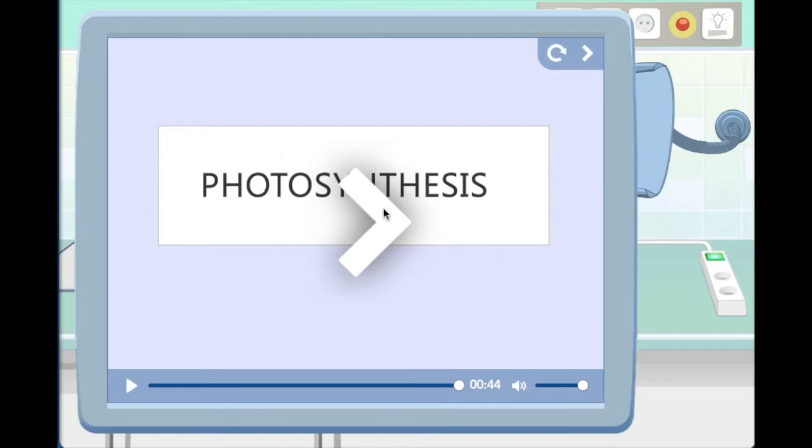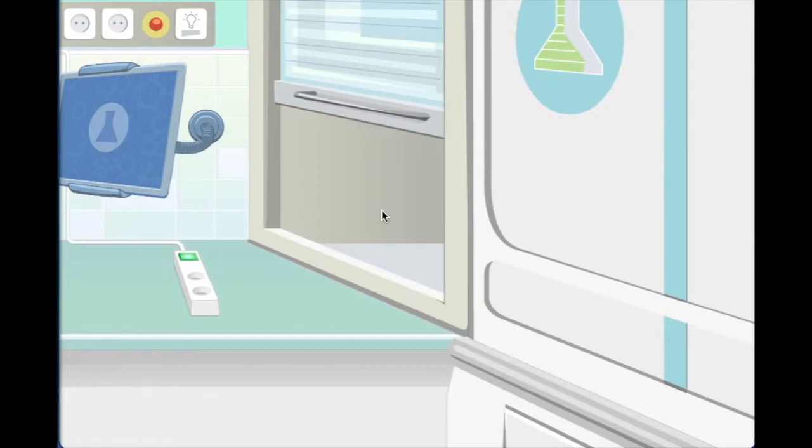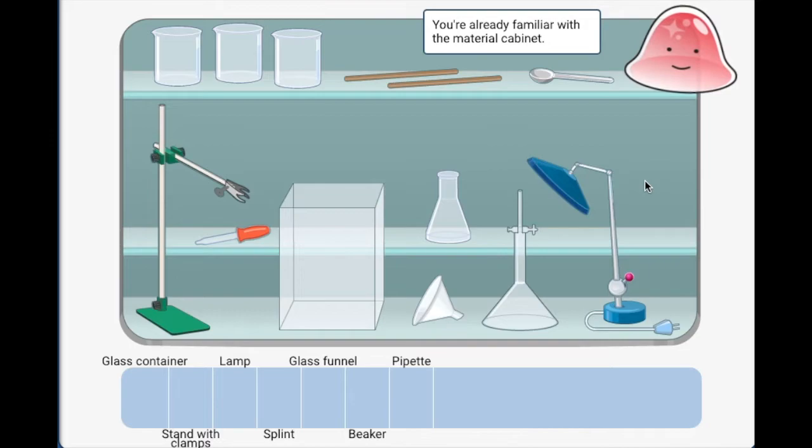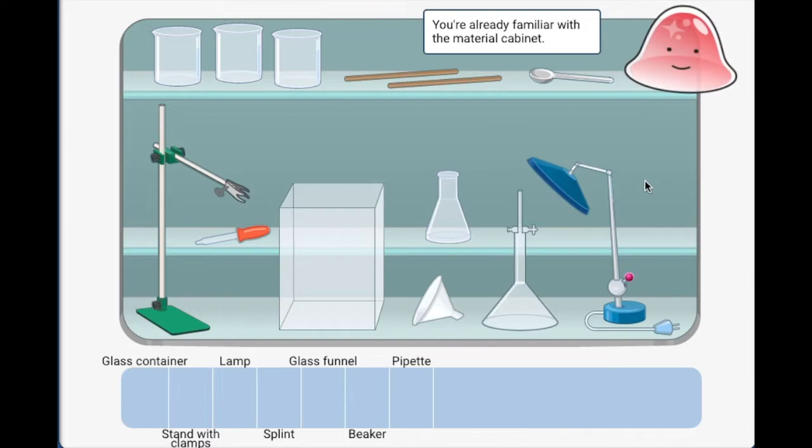So we have understood the photosynthesis. Now we have to go to the material cabinet. We have to decide what we have to take. So this is our material cabinet. For this experiment we will need a large glass container, a beaker, a stand, a lamp, a glass funnel, a splint, and a pipette.